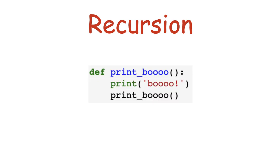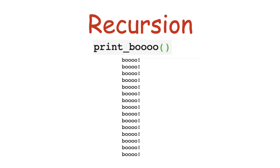To understand dynamic programming, you have to first understand recursion, the concept of a function calling itself. Here we have a function that prints BOO and then calls itself. If we run it, we will just get an endless loop of prints without an end.